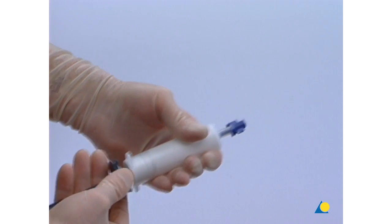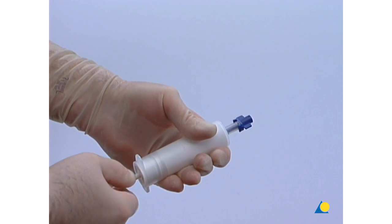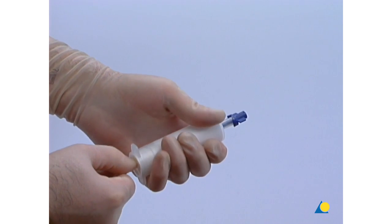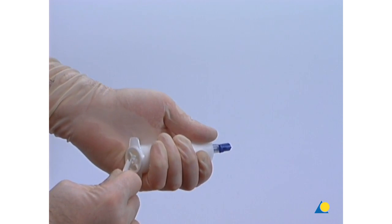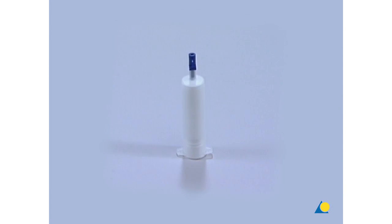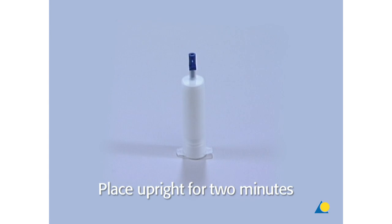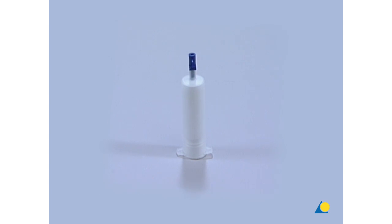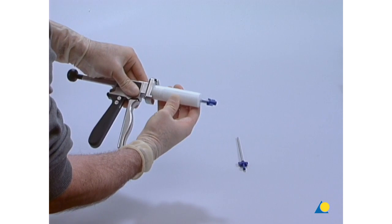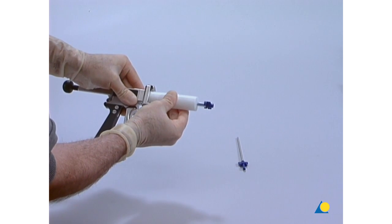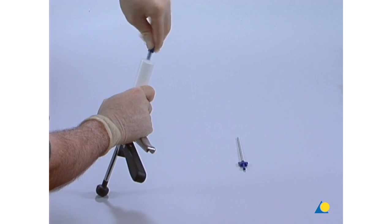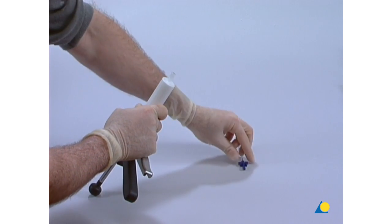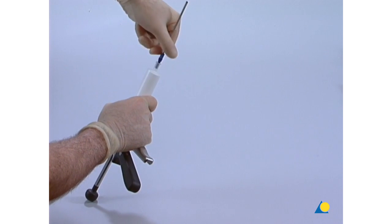After mixing is complete, the plunger is fully pulled out and snapped off. The cartridge is placed upright for two minutes so that air bubbles can escape. The cartridge is loaded into the bayonet catch on the delivery gun. The blue sealing cap is removed and the appropriate injection cannula is mounted.